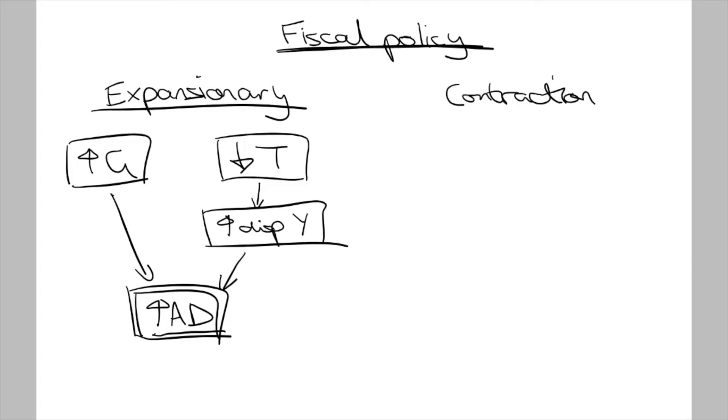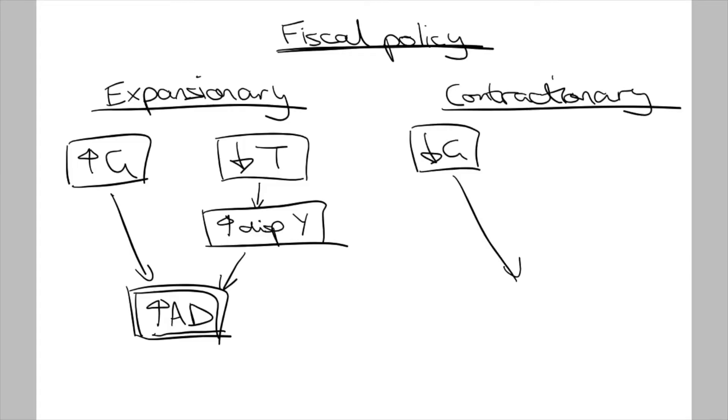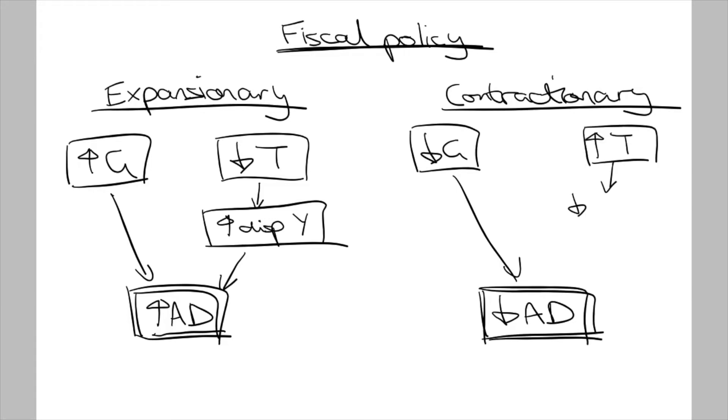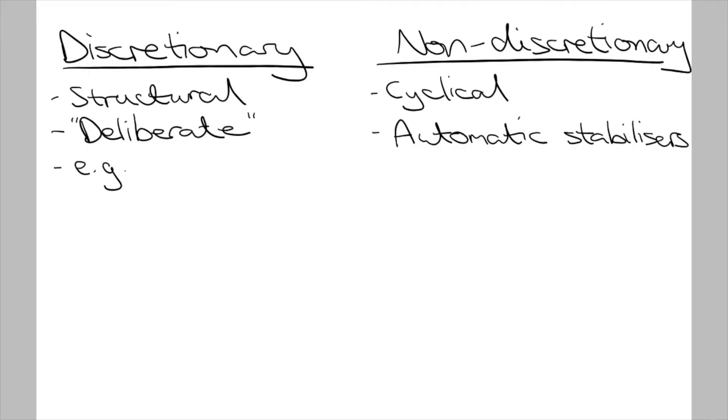Conversely, the federal government can also increase taxes and reduce government spending for a contractionary stance. They may choose to do this to slow down an inflationary boom or achieve the objective of fiscal consolidation, which is to bring the budget outcome from deficit to surplus. When a government uses a contractionary stance, they reduce government expenditure to lower aggregate demand. They could also increase taxes, as this would leave households with less disposable income, which further reduces aggregate demand. Again, this could happen through discretionary or non-discretionary changes.